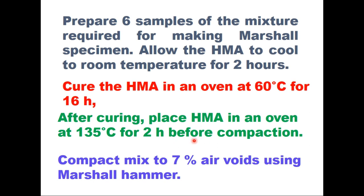Compact this mixture to a Marshall specimen such that the air voids in the mixture are 7%. This is an important consideration, and 7% air voids are achieved by trial and error. You can change the number of blows on each face starting with 20 blows, gradually increasing the number and plotting blows versus air voids, then find how many blows correspond to 7% air voids.